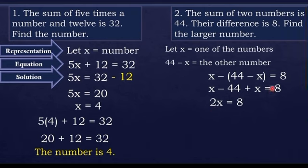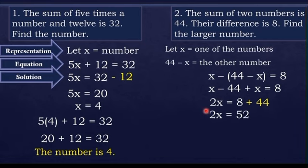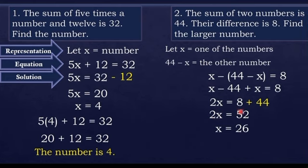Next, we transpose negative 44. When we transpose, the sign changes, so negative 44 becomes positive 44. We have 2x equals 8 plus 44, which is 52. Dividing both sides by 2, 2x divided by 2 is x, and 52 divided by 2 is 26. So x equals 26.